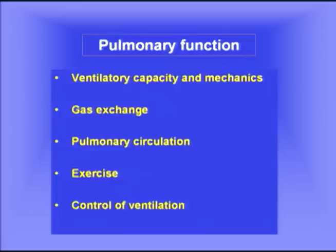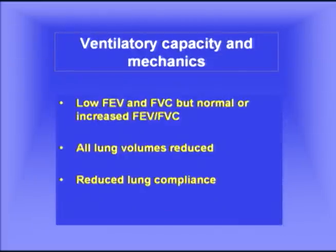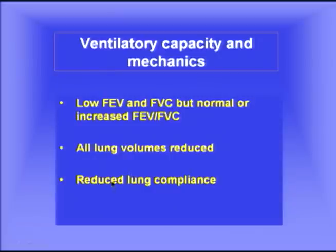Let's look at pulmonary function in diffuse interstitial pulmonary fibrosis under five headings: ventilatory capacity and mechanics, gas exchange, the pulmonary circulation, exercise, and the control of ventilation. Ventilatory capacity and mechanics are seriously impaired. There is a reduced forced expiratory volume and forced vital capacity. But interestingly, the ratio of FEV1 to FVC is often preserved and may even be increased compared with normal. All lung volumes are reduced, and there is usually a striking reduction in lung compliance — the lung is much stiffer, much more difficult to expand.